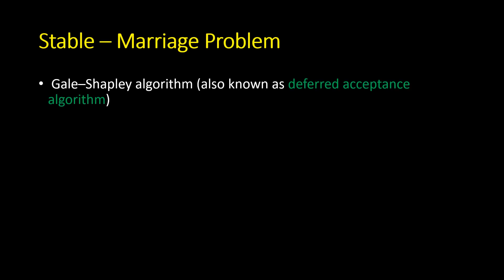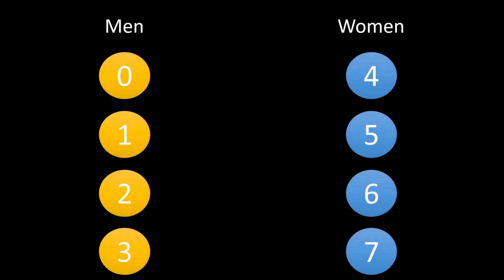This problem can be solved using Gale-Shapley algorithm, also known as deferred acceptance algorithm. Let's see what is the input and how it is defined. Suppose there are 4 pair of men and women. Men are numbered from 0 to 3 and women are numbered from 4 to 7.